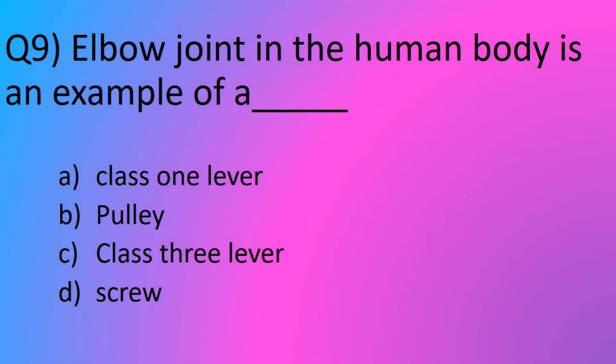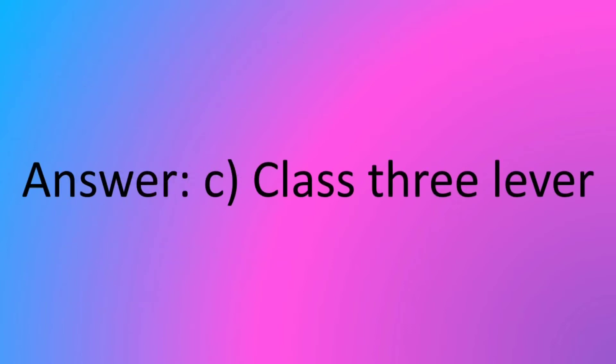Question number 9. Elbow joint in a human body is an example of a blank. Option A, class 1 lever. Option B, pulley. Option C, class 3 lever. Option D, screw. The answer is option C, class 3 lever.